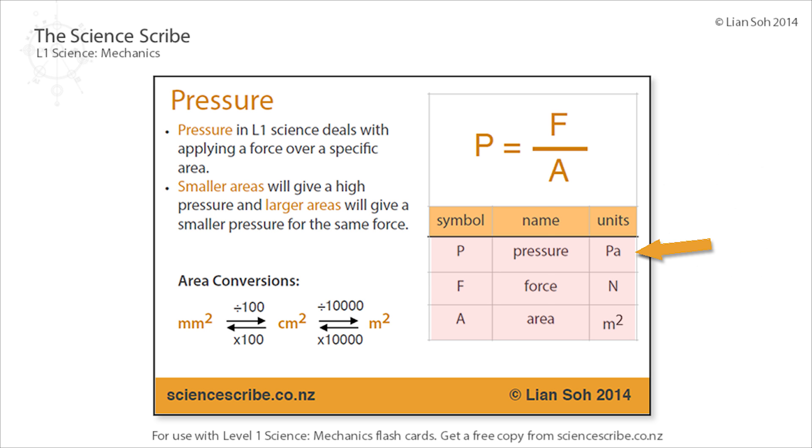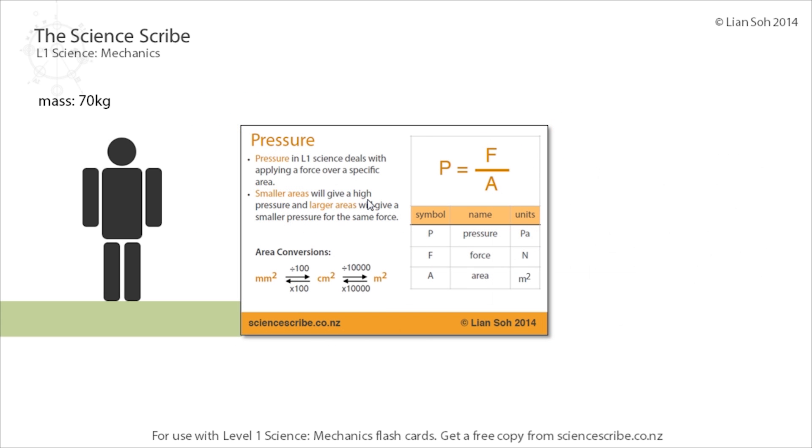Now suppose I had a person standing on the ground with both their feet, with a mass of 70 kg. This means that their weight force is 700 newtons, because F equals ma and the acceleration due to gravity is 10. If you've forgotten that, head back to the force flashcard. So he's got a weight force of 700 newtons, and let's say that the contact area between his feet and the ground is 550 centimeters squared.